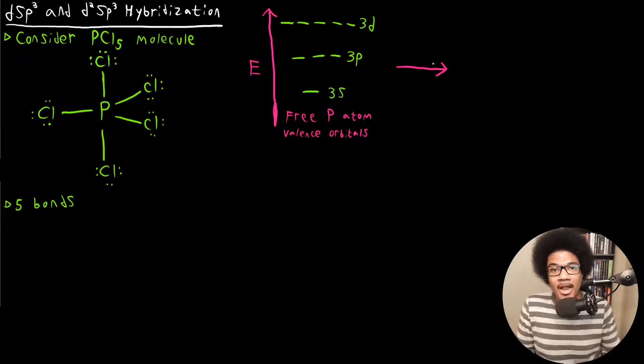So by now, if you're kind of getting the pattern, that means it's going to take one D orbital, three P orbitals, and the one S orbital. So therefore it's going to form five hybrid orbitals. These are going to be your DSP3 hybrid orbitals, and that's going to leave us with four unhybridized 3D orbitals. So this is going to be the orbital landscape here after hybridization.